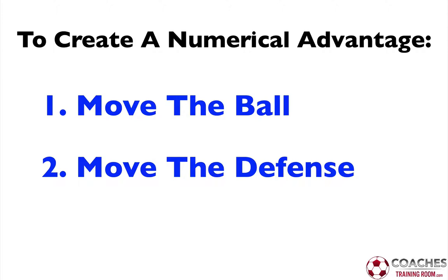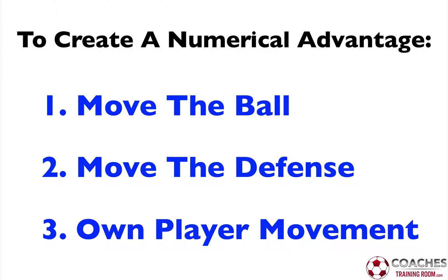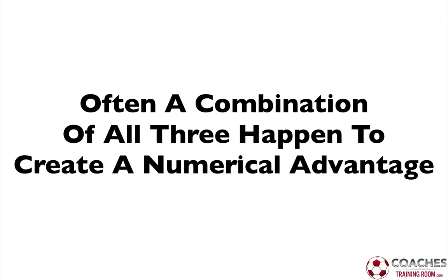And finally, your own player movement. Your own player movement can obviously maintain your possession of the ball. You can create opportunities, support, and retain possession, and also exploit opportunities moving forward. Often each of the following — moving the ball, moving the defense, or moving your players — each of those happen as a result of the other. So if you move the ball, your player might move to a good position, you then move the ball and that in turn is going to move the defense. Now we're going to dig a little deeper into what it takes to create a numerical advantage, or a numbers-up situation as it's often referred to.